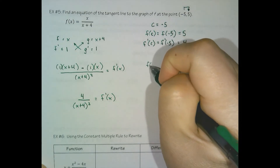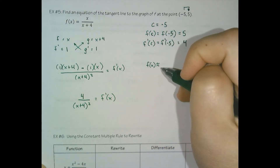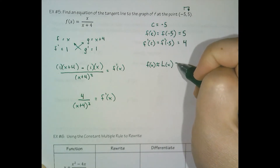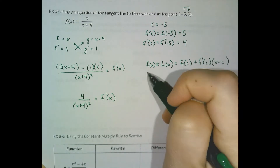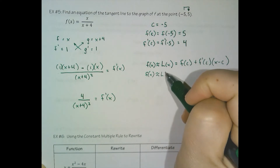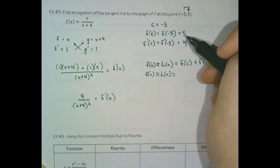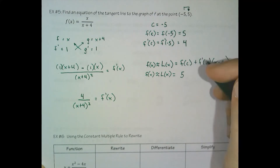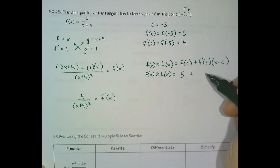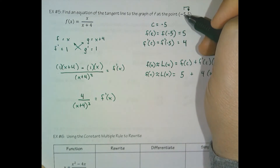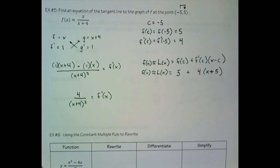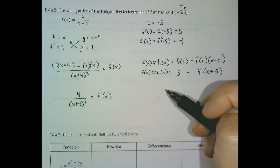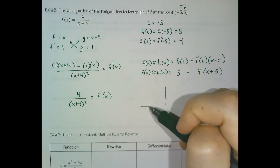We can write our tangent line approximator — the function is approximated by the tangent line. When we populate these fields: f of c is the y-coordinate, or 5; f prime of c is the slope, or 4; and x minus c is where we're centering it — we're centering it at negative 5, so x minus negative 5 becomes x plus 5. So if we were to grab a calculator and take a look at what this function looks like, or do some exploration using knowledge that we have, we would find a curve that looks something like this.